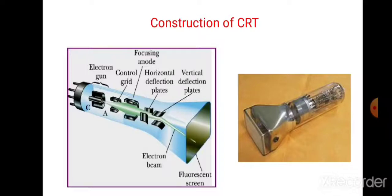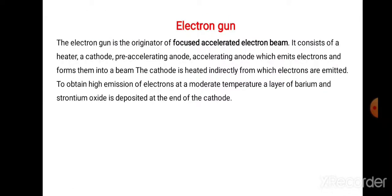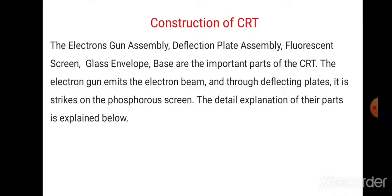This focusing can be achieved either by means of an electrostatic field or a magnetic field. This is the construction of the cathode ray tube. The main components of the cathode ray tube are: the electron gun assembly, deflection plate assembly, fluorescent screen, and glass envelope. These are the important parts of the cathode ray tube.